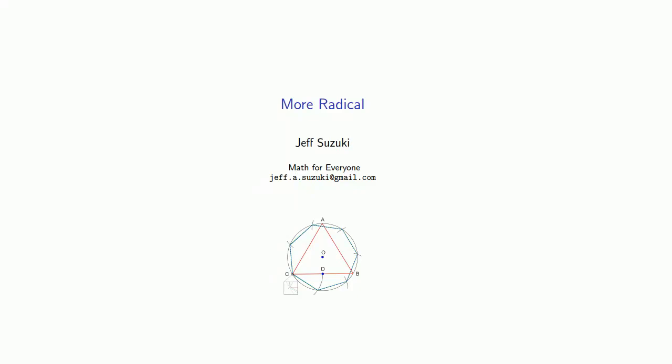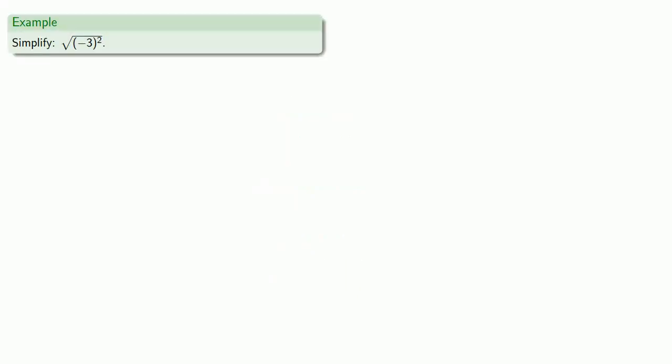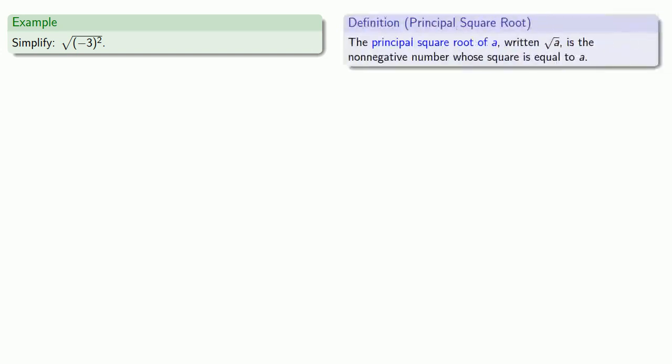Let's get more radical. Let's try to find the principal square root of negative 3 squared. By our definition, the square root of negative 3 squared is the non-negative number whose square is negative 3 squared.